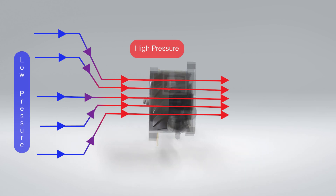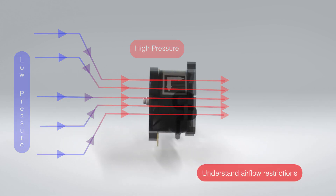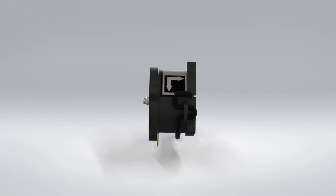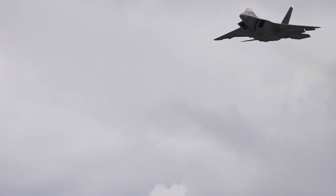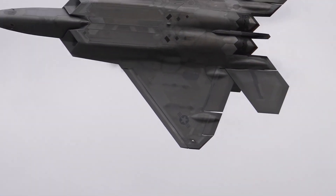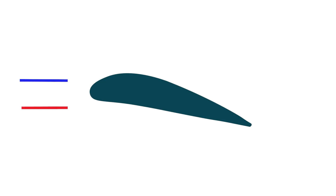It is, therefore, critical when selecting an axial fan to understand the airflow restrictions and not operate the fan at a point that will cause it to stall. An axial fan uses the same aerodynamic principles as an aeroplane wing, whose airfoil section generates lift, or airflow in the case of a fan.